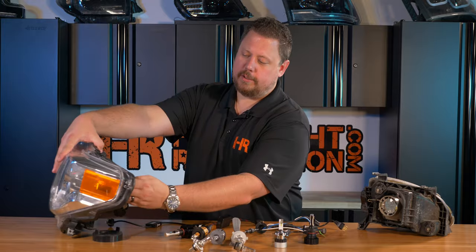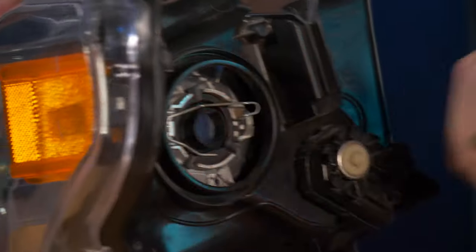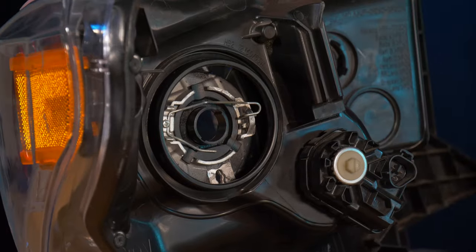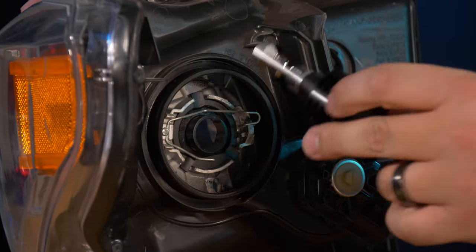You put the collar in first just like the mounting on the original halogen bulb, then the spring clip goes on, and now your bulb can slide in place.